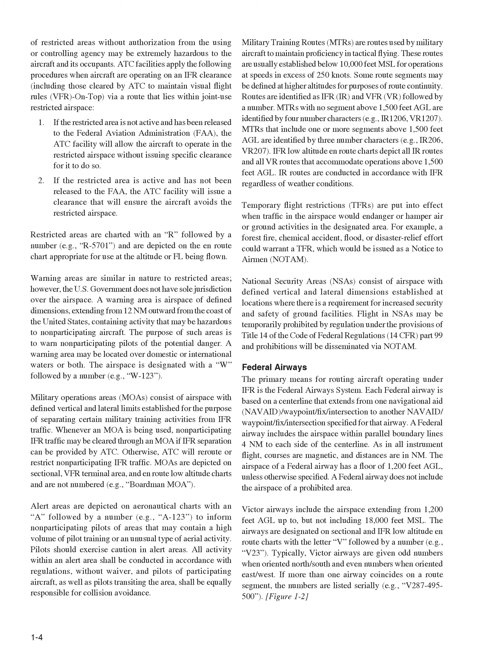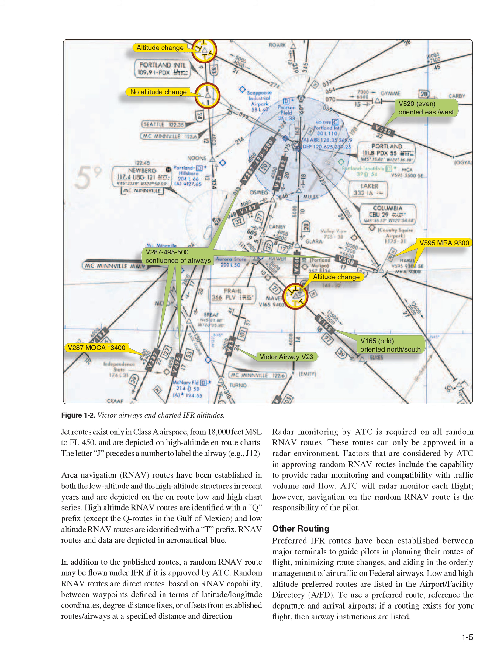Typically, Victor Airways are given odd numbers when oriented north/south and even numbers when oriented east/west. If more than one airway coincides on a route segment, the numbers are listed serially, for example V287-495-500. Jet routes exist only in Class A airspace, from 18,000 feet MSL to FL450, and are depicted on high-altitude on-route charts. The letter J precedes a number to label the airway, for example J12.